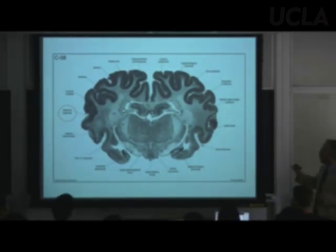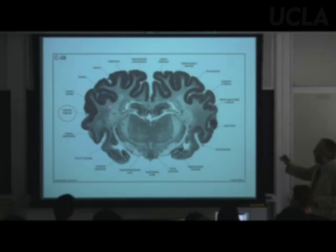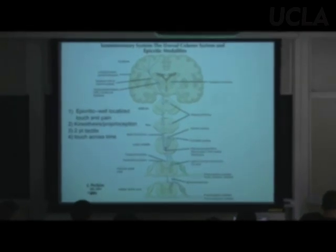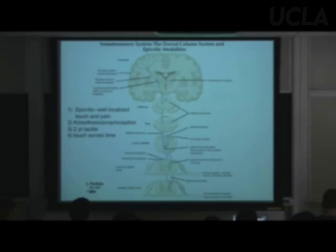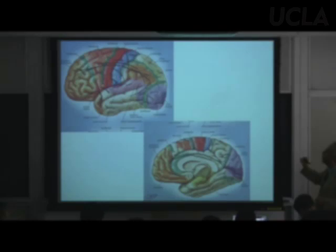Here's a coronal section midway through the telencephalon. The thalamus — part of the diencephalon, not the telencephalon — is the gray ball here. The internal capsule is the axons wrapping around the thalamus on both sides. The last synapse in this system is up in the postcentral gyrus of the parietal lobe.